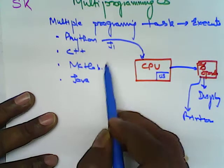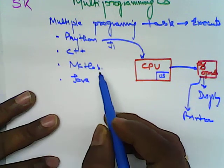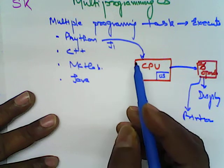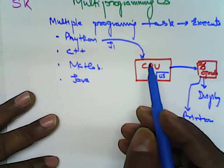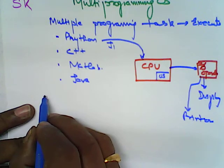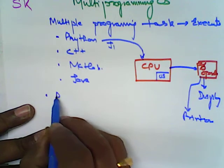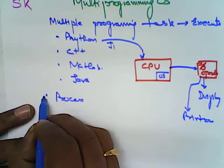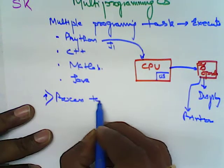So, the multiprogramming operating systems, the CPU carries out the process like this. First process, first it will carry out the process, terminate. That means, one process is being carried out at one instance.